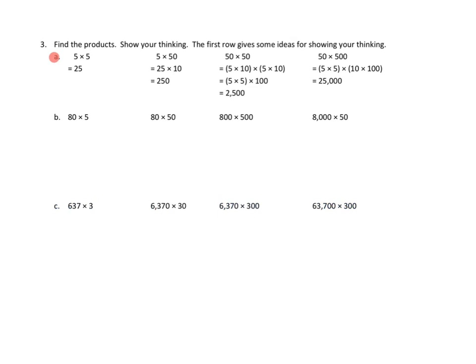For our last problem this evening, we're just going to review how they handled 3a. The directions for number three are pretty straightforward. Find the products, show your thinking. The first row gives some ideas for showing your thinking. So let's take a look at 3a. They say 5 times 5 is 25. That's pretty straightforward, a basic math fact. And they say, what about 5 times 50? And I see what they've done here. They've said basically it was kind of a tweener step. They expressed this as basically 5 times 5 tens.